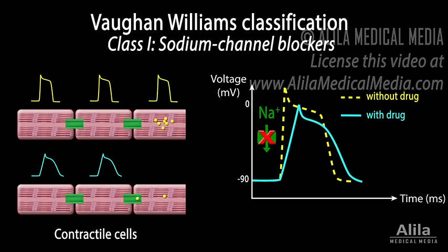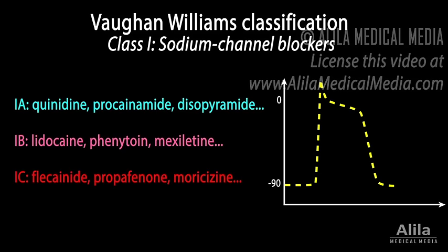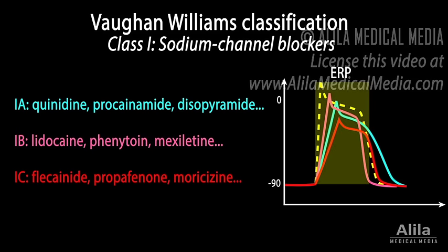This reduced conduction velocity helps to suppress formation of reentrant circuits, hence the use of these drugs for treating reentrant tachycardias. Class 1 agents are divided further into subclass 1A, 1B, and 1C. These subclasses differ in the strength of sodium channel blockage and in their effect on the duration of action potentials and the effective refractory period, the ERP.